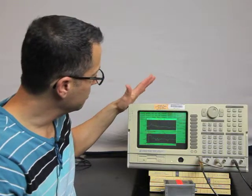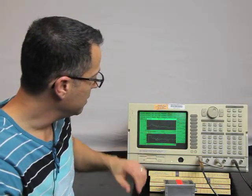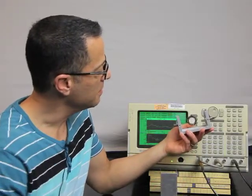This is the Stanford Research Systems SR785. It's a two channel dynamic signal analyzer. You're going to use this to measure the transfer function using swept sine signal analysis of a three terminal piezoelectric buzzer element.